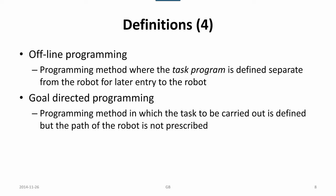Offline programming is the programming method where the task program is defined separate from the robot for later entry to the robot. This is usually where simulation systems come into place. Goal-directed programming is a programming method in which the task to be carried out is defined, but the path of the robot is not prescribed.